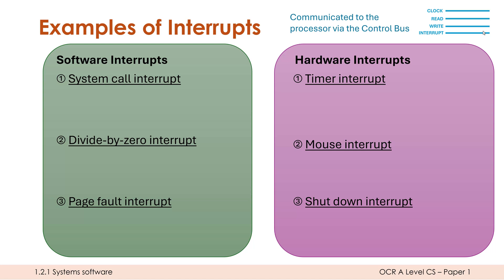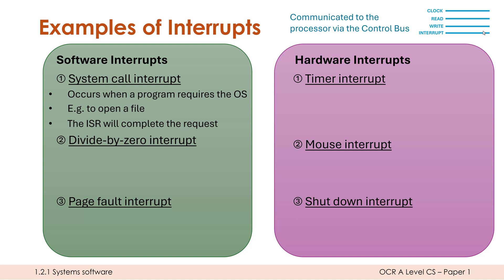In terms of software interrupts, we have what are called system calls — mentioned in the operating system video a couple of videos ago. These are like a bunch of subroutines which other applications can use to get the OS to do something. For example, a program could require the OS to open a file. The program can't open a file on its own and needs the OS to help it, so it launches an interrupt to ask the OS to complete this request. The OS runs the relevant ISR which handles this, and when it's done, it returns control to the main application.